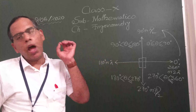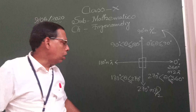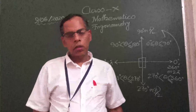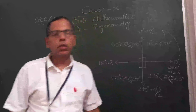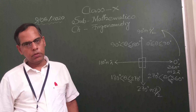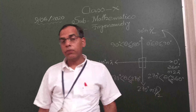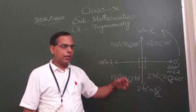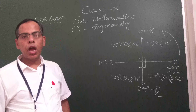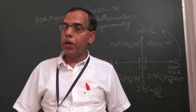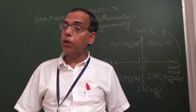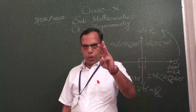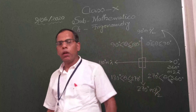As of now, we will not go to the third and fourth quadrant — you will get those in higher classes. We will concentrate only on the first and second quadrant. Now, before that, how many trigonometric ratios are there? There are six trigonometric ratios.